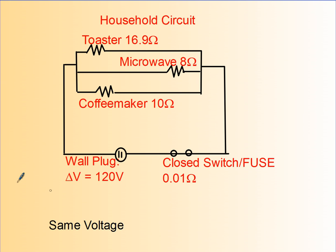Now let's look at a typical household circuit. These are all at the same voltage. This is 120V coming out of your wall. And we have a closed switch or a fuse here, which is very important. The coffee maker in this example is only 10 ohms, the microwave is 8 ohms, and the toaster is 16.9 ohms. This is an example of parallel. Now clearly, if the toaster is not on, you should want to be able to use your microwave, and you certainly have to be able to use that coffee maker first thing in the morning.